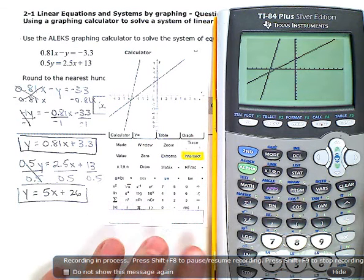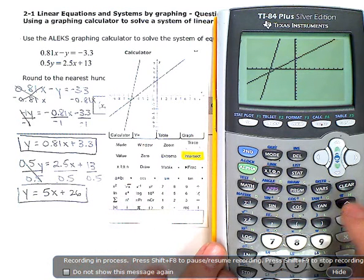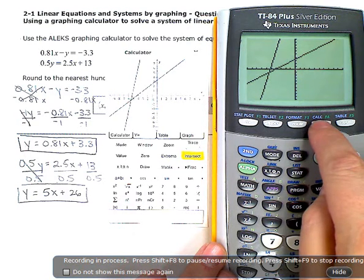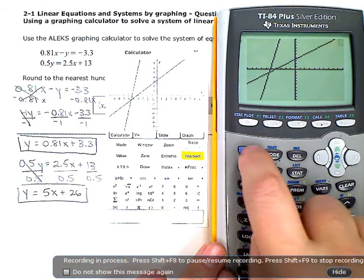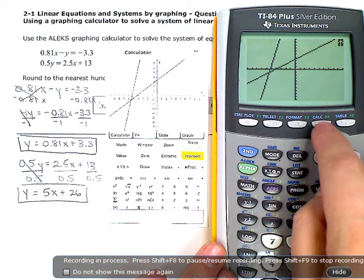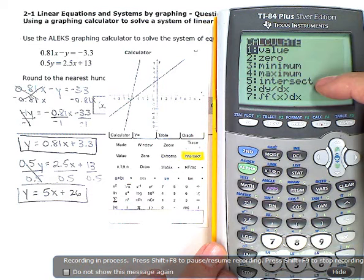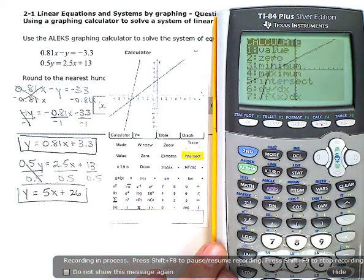On these, the yellow calculators, we don't have a button that does the intersection. We need to access that calculate, that blue little calc up there. So we're going to hit the blue second button, and then this trace button to get to that calculate menu. And option number five is find the intersection. So we're going to choose five.